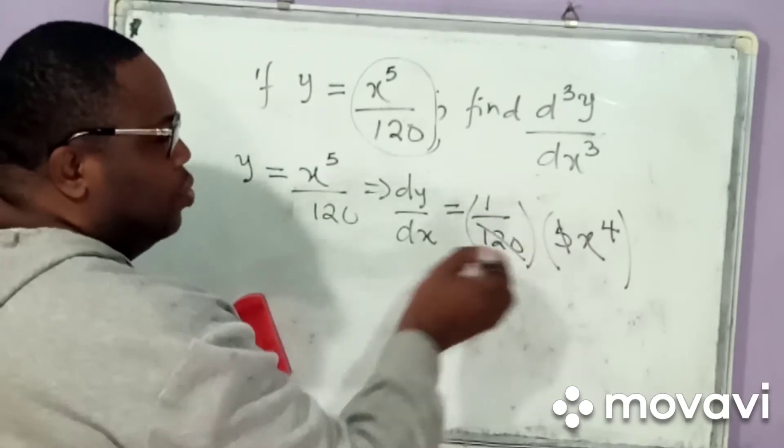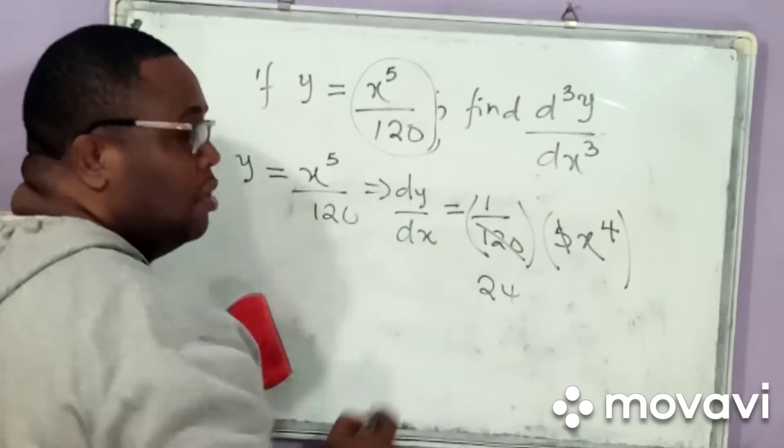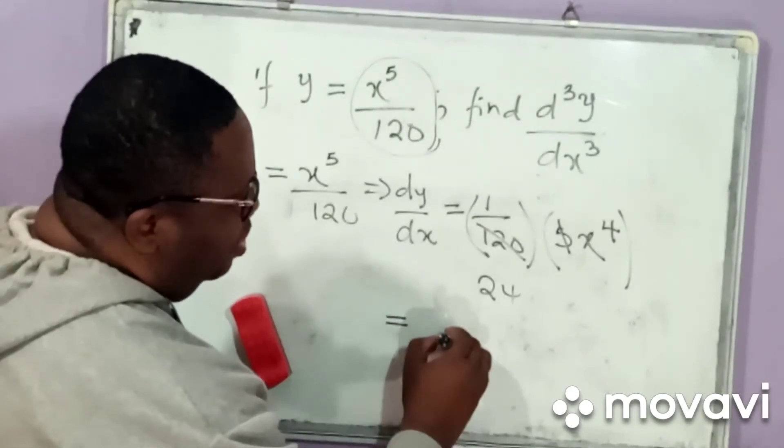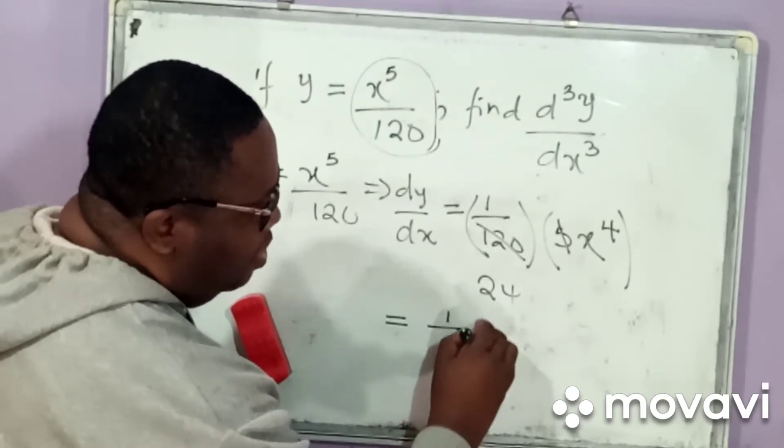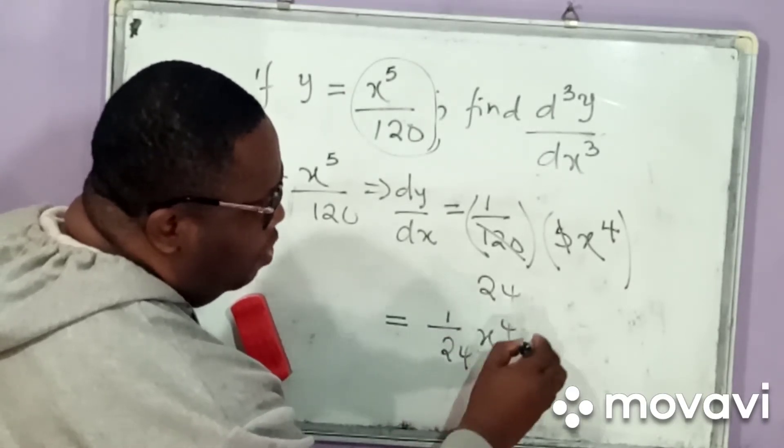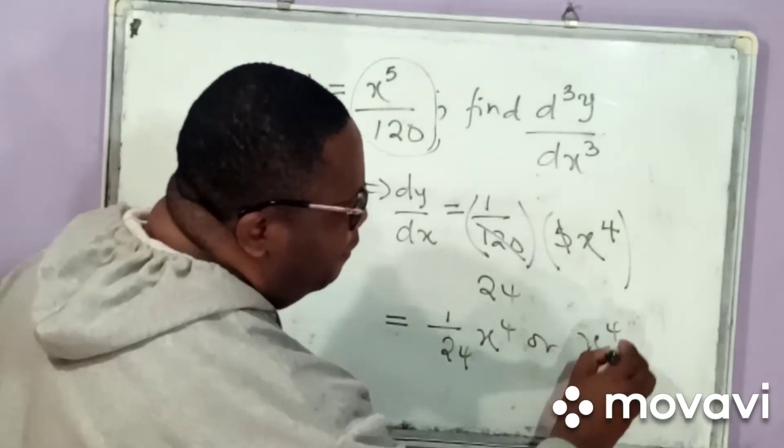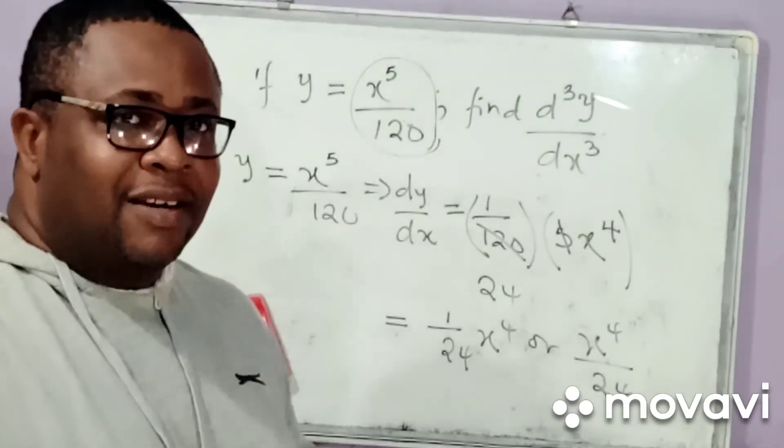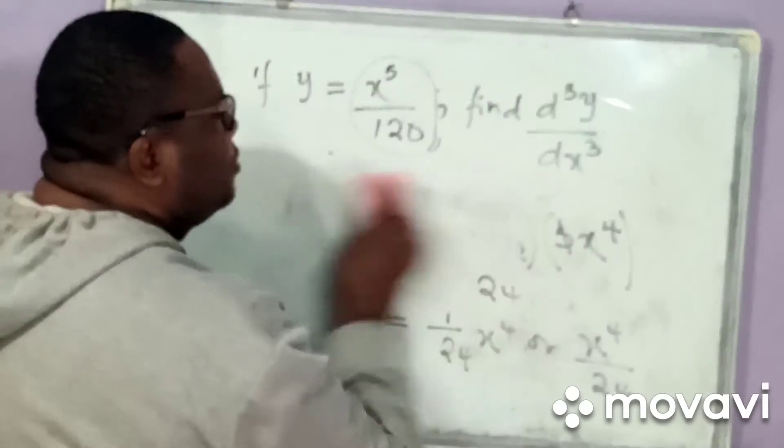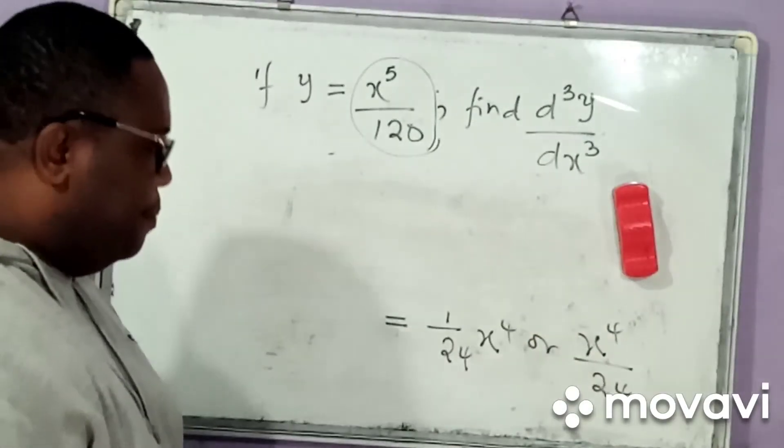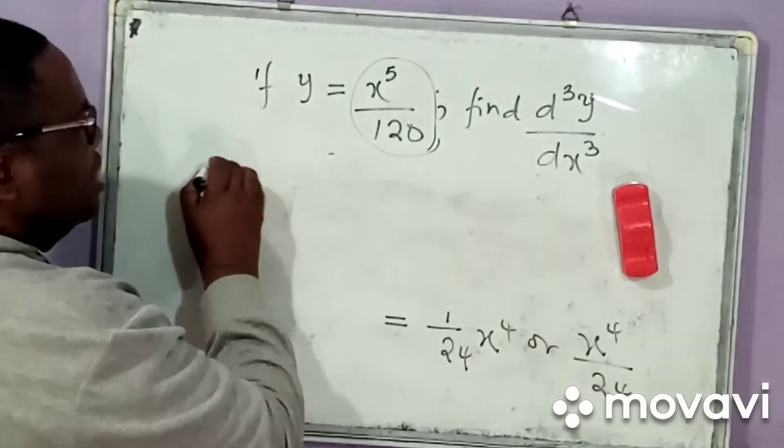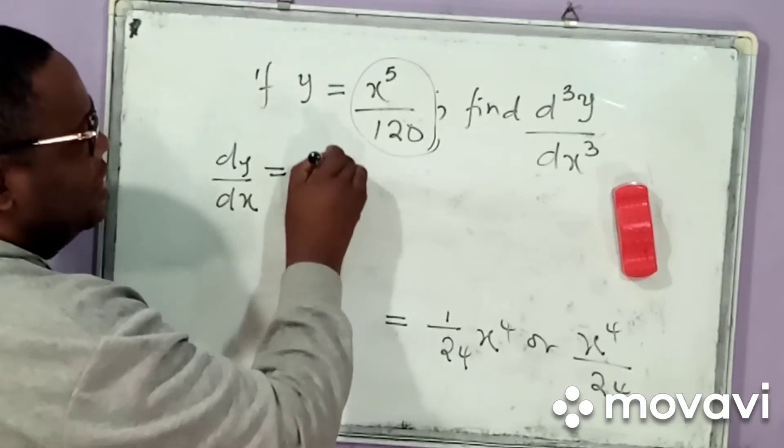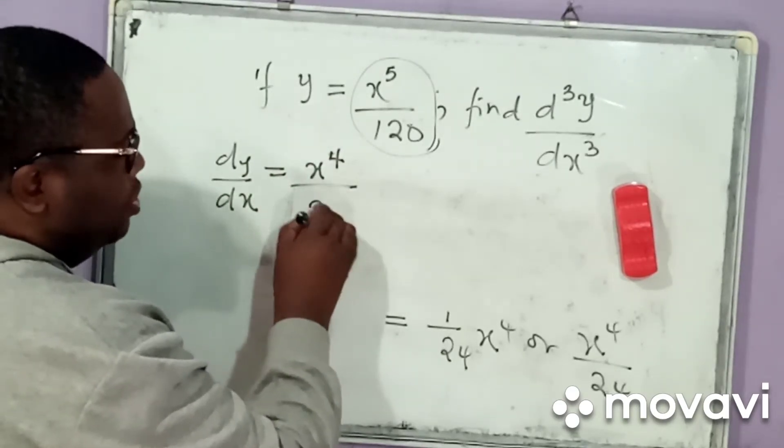Now, 5 goes into 120. That will simply be 24 fives. So, my answer for the first derivative would simply be 1 over 24, then we have x to the power 4. Or, we can simply write it as x to the power 4 divided by 24. I hope you understand what we are doing.